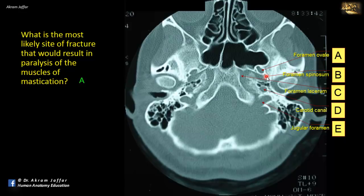B, foramen spinosum, allows the passage of nervus spinosus, which is sensory for the meninges of the middle cranial fossa. C, foramen lacerum, is actually closed in life and might allow passage of some emissary veins but not nerves or arteries. The carotid canal allows passage of the internal carotid artery surrounded by a plexus of sympathetic nerves. The jugular foramen allows passage of cranial nerves 9 (glossopharyngeal), 10 (vagus), and 11 (accessory), none of which are involved with the nerve supply of the muscles of mastication.